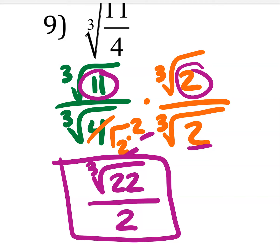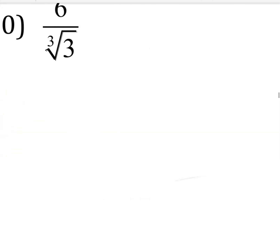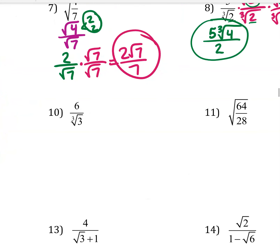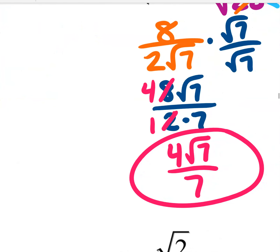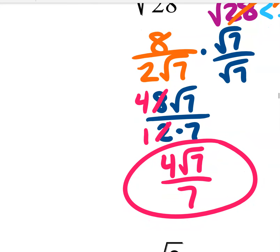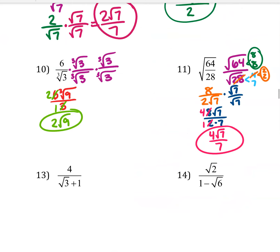Pause and try numbers 10 and 11 on your own. Here is my work for 10 and 11. On number 11, when you factor the bottom there's an outside number and a √7 — you can reduce that outside number whenever you want, either before or after rationalizing. It's your call. If you have questions, ask your teacher or ask me tomorrow in class.